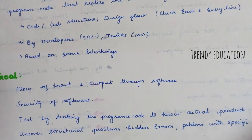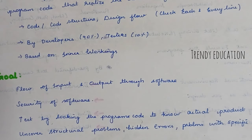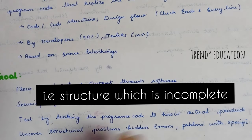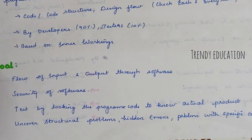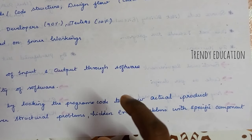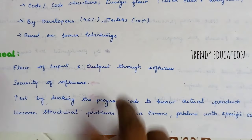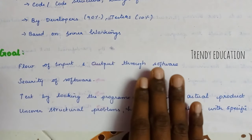Another goal is to uncover structural problems — the structure of the code is checked thoroughly. Hidden issues within the code can be identified. This is the reason we do white box testing — to address bad decisions made in the code. We will also talk about black box testing separately.